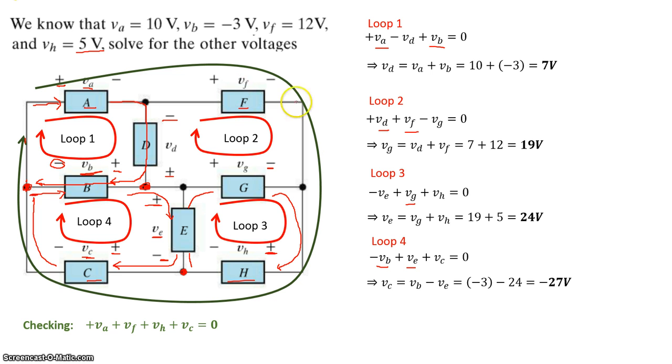I'm just looking at the outer nodes and the elements in that node: VA, VF, VH, and VC equals zero. Now let's use the value of VA, which was 10 volts, VF is 12 volts, VH was 5, and VC was minus 27. So just plugging that all in, we get 10 plus 12 plus 5, which is 27.